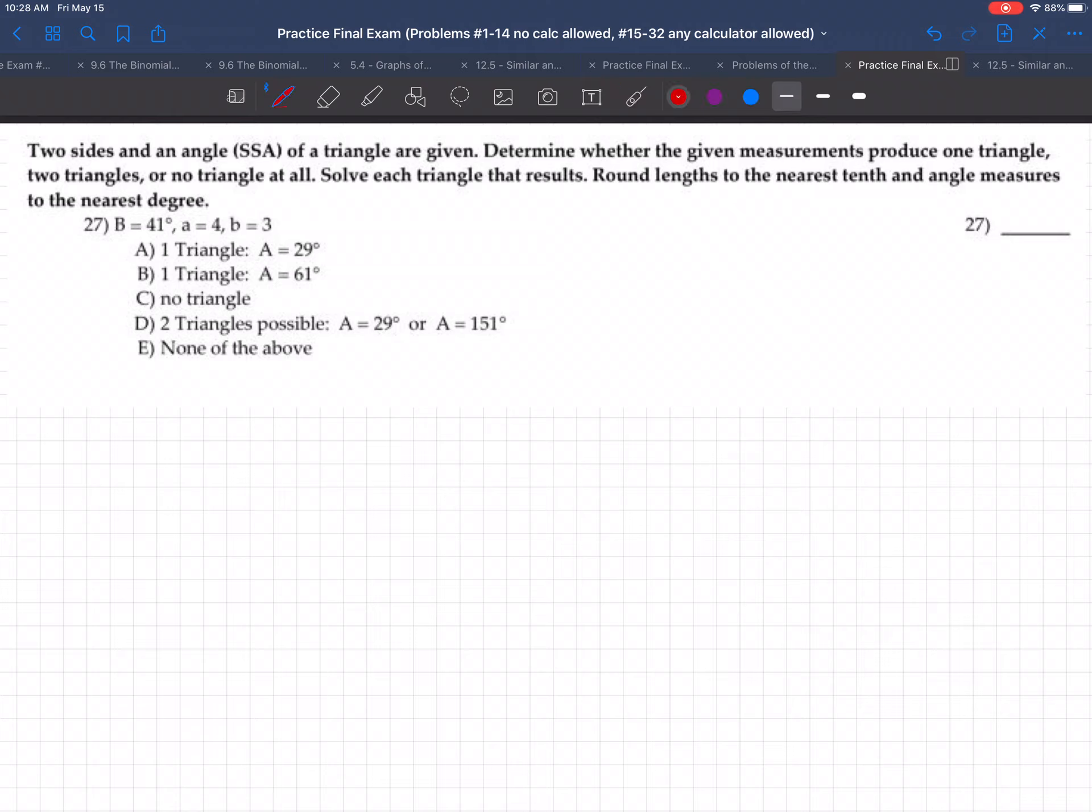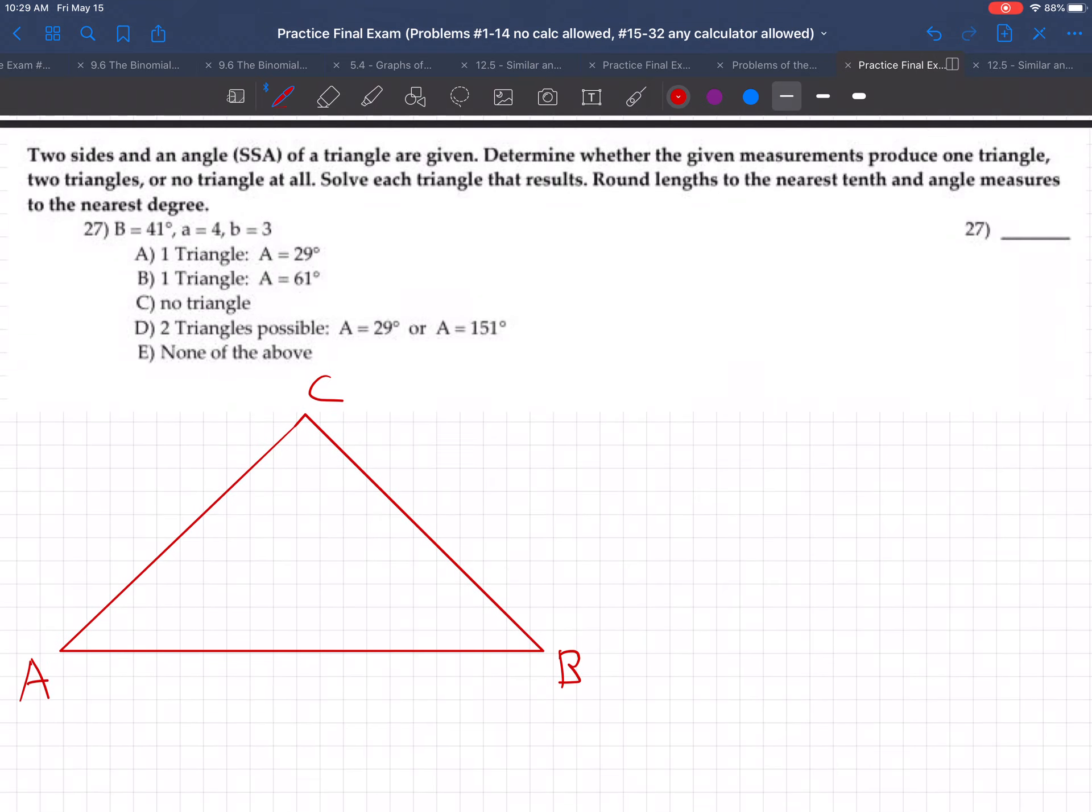Okay, so on these triangle problems, let's first draw a triangle. And then we use that and fill in the information. It's always capital A, capital B, capital C for the angles. And then the sides across from capital A is little a, across from capital B is side little b, and across from angle C is side little c. So the sides and angles that match are across from each other. A is across from a, B across from b, C across from C. That's how we do these problems.